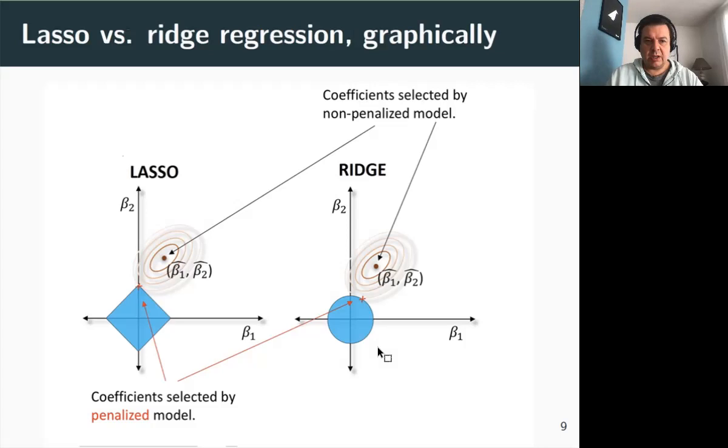Let's have a look graphically to what all this means. Let's assume we have two parameters, beta one and beta two. On the left you have the LASSO and on the right you have ridge regression. The likelihood in this figure is represented by these elliptical contours here. If you don't penalize the likelihood, then the solution to the optimization problem is in the center of this ellipse here. These are the maximum likelihood estimates for beta one and beta two.